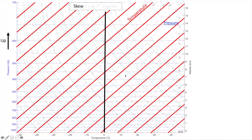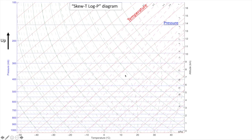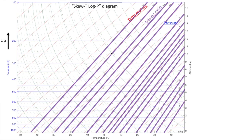This is a temperature-pressure space, so we have one set of lines representing temperature and one set representing pressure, but we have three more sets of lines to explain. The first of the remaining sets of lines is water vapor mixing ratio, or the ratio of the mass of water vapor in the air to the mass of everything else in the air, which includes nitrogen, oxygen, argon, increasingly CO2, etc. This is measured in grams per kilogram.